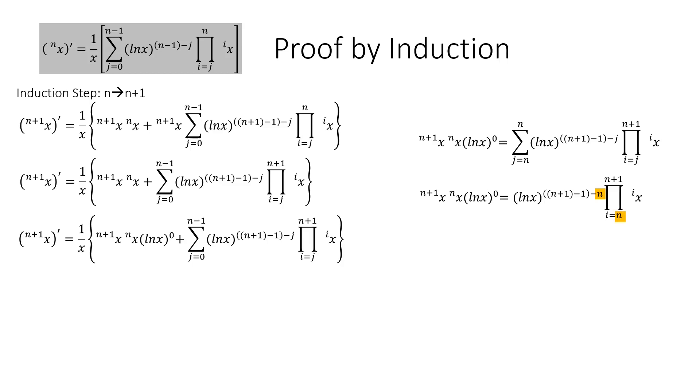And now the exponent of ln x reduces to 0 n times the n plus 1th tetration of x times the nth tetration of x. Then we plug in the sum equivalent.